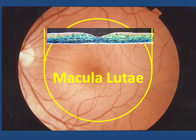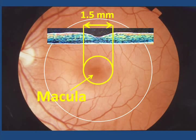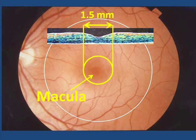So far in this video, the features of the central retina have been labeled as an anatomist might describe them. Among medical professionals, however, the term macula is often used to indicate the immediate vicinity of the foveal pit, and the term fovea is used to indicate the floor of the foveal pit.